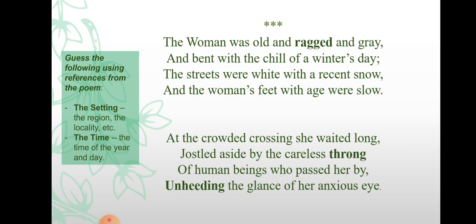Now the second stanza: 'At the crowded crossing, she waited long, jostled aside by the careless throng of human beings who passed her by, unheeding the glance of her anxious eye.' The careless large crowd pushed her aside and many people passed by her, but nobody bothered about her anxiety. The crowd neglected her and didn't look at her anxious eye. 'Anxious' means feeling or showing worry or unease about something with an uncertain outcome.